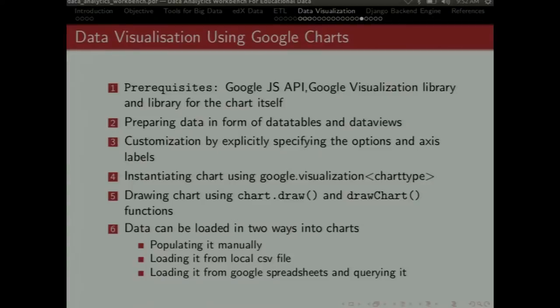Since we have done the visualization using the D3 part, so we tried it using the Google charts. Basically it provides you with a large number of dynamic charts and more complex ones where you can have the flexibility of choosing what you want on the x-axis, y-axis and the labels for that. So Google charts uses three JavaScript libraries. One is the JS API visualization library and the library for charts itself. So then to proceed with the charts, you have to prepare the data in the form of data tables and views. And then you can customize it, instantiate it. And then you can draw the charts. You have two functions chart.draw and draw charts.